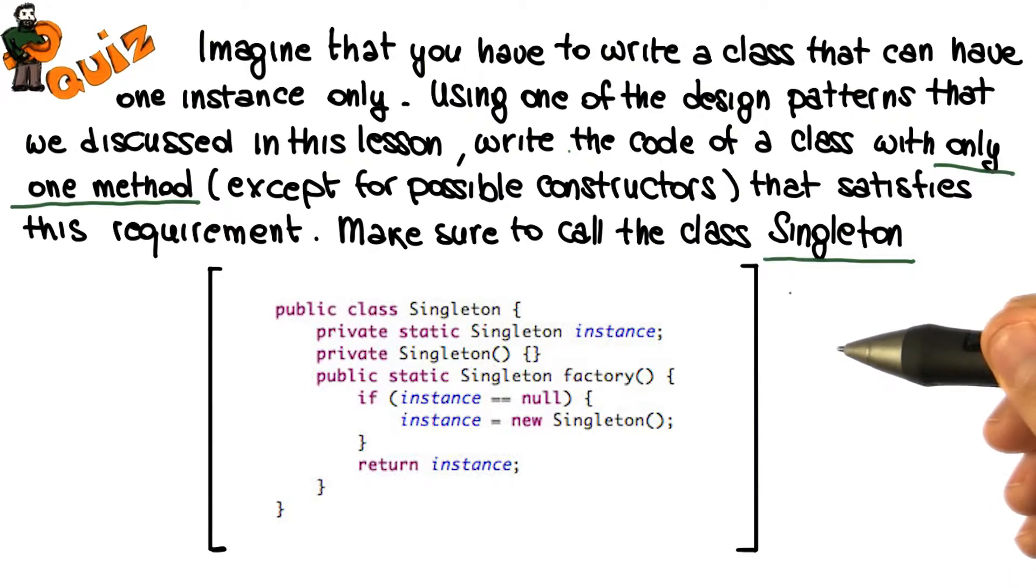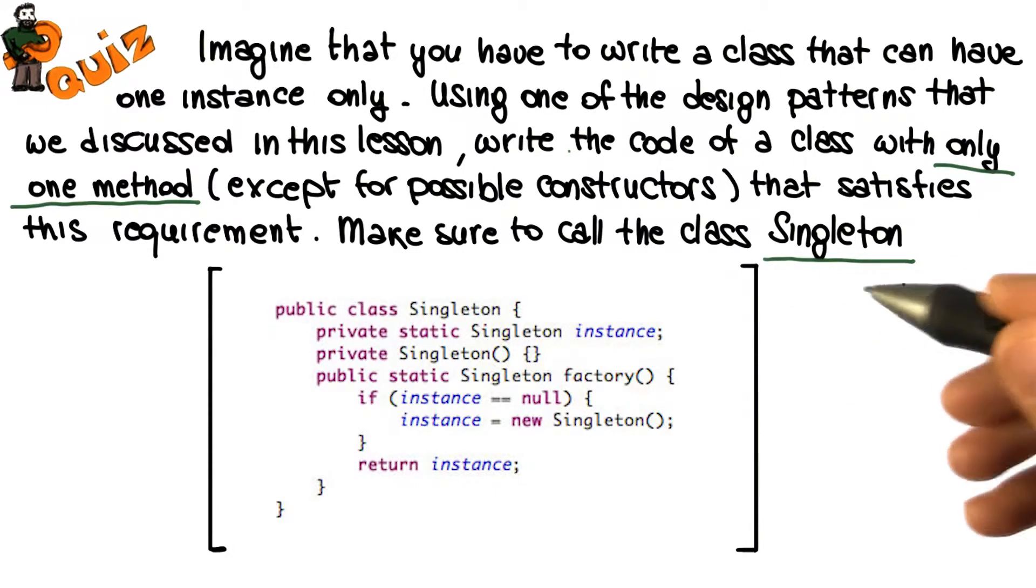So what we did for this code was to first create a private static singleton object called instance, which is the one that will keep track of the only instance that can be created of the class.